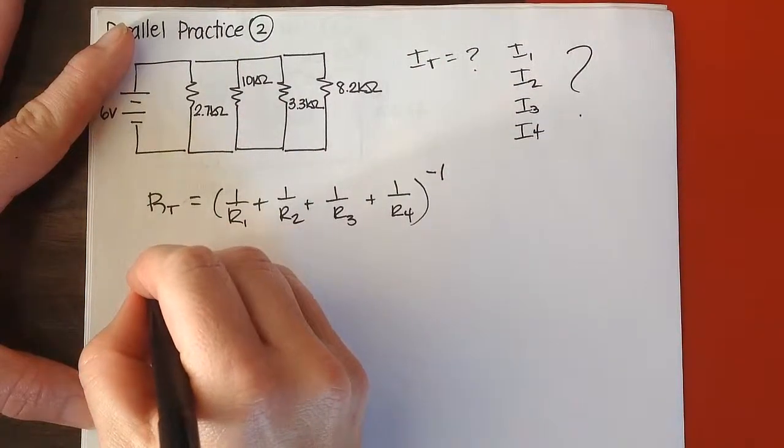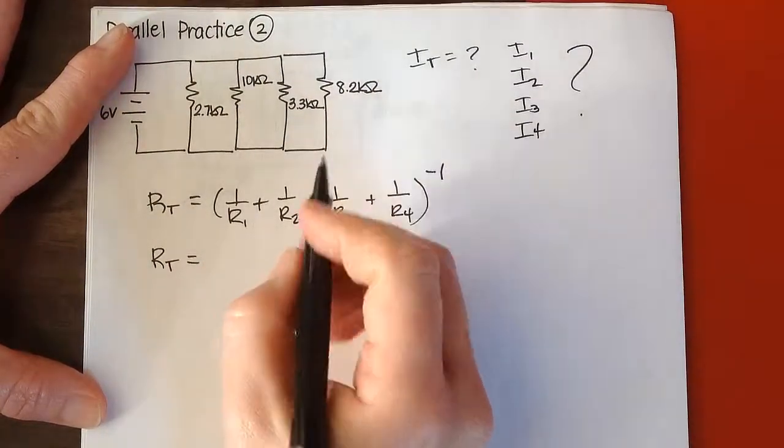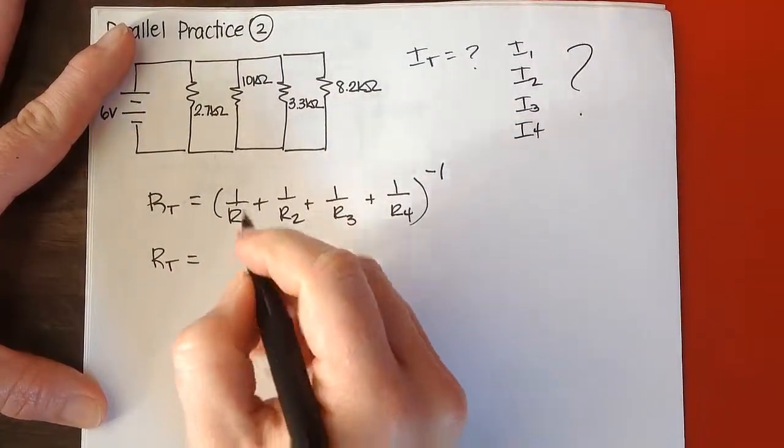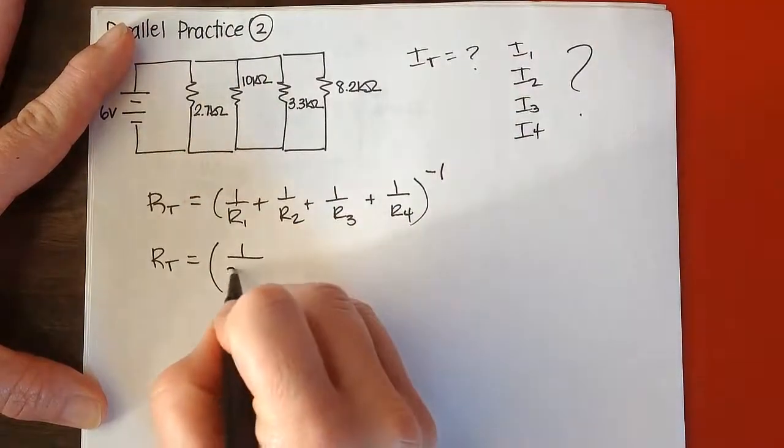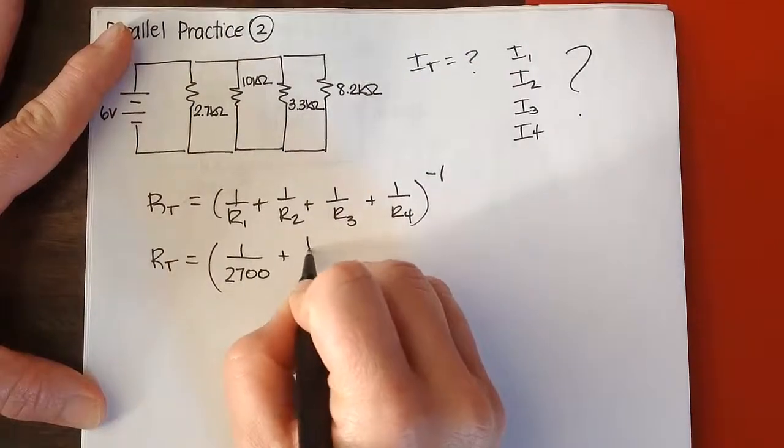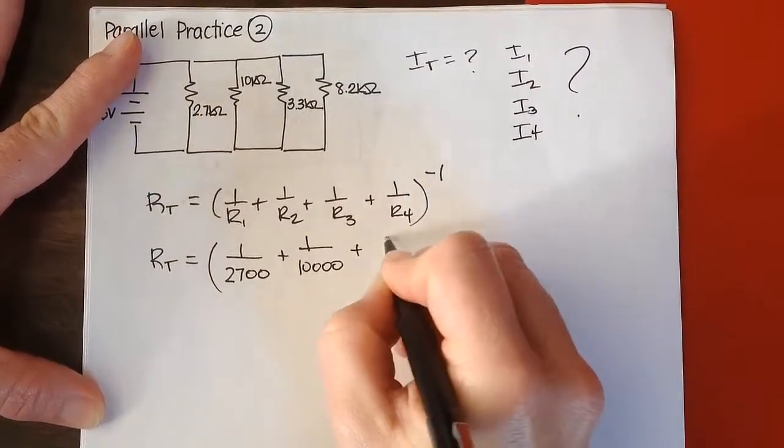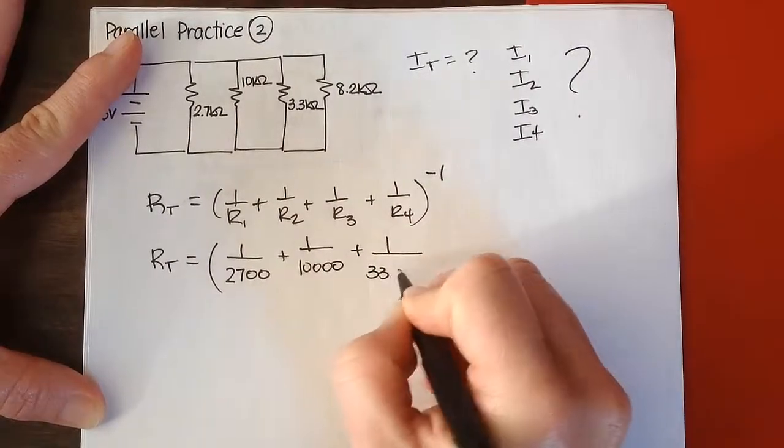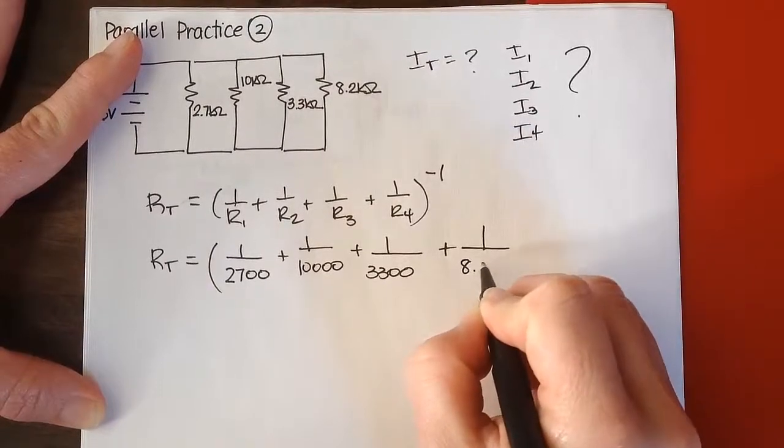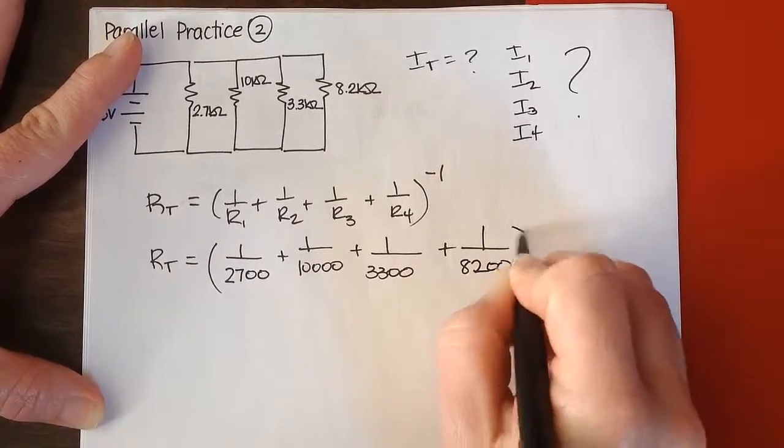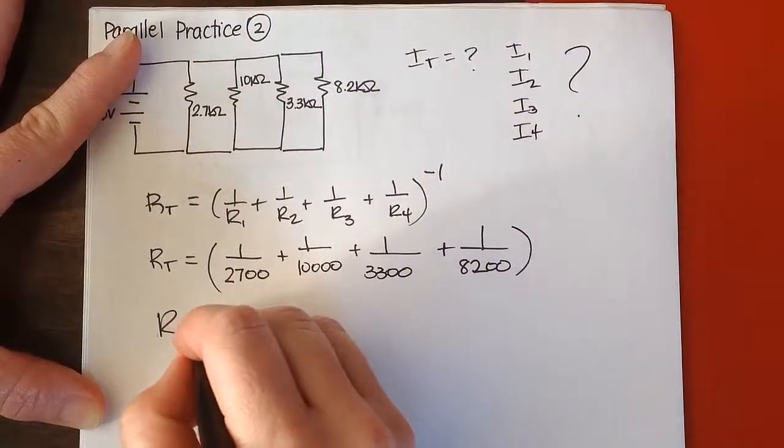Now when we plug in, remember we need to be in our fundamental units, not in kilohms, so we'll need to convert everything. That'll be 1 divided by 2,700, plus 1 divided by 10,000, plus 1 divided by 3,300, plus 1 divided by 8,200.